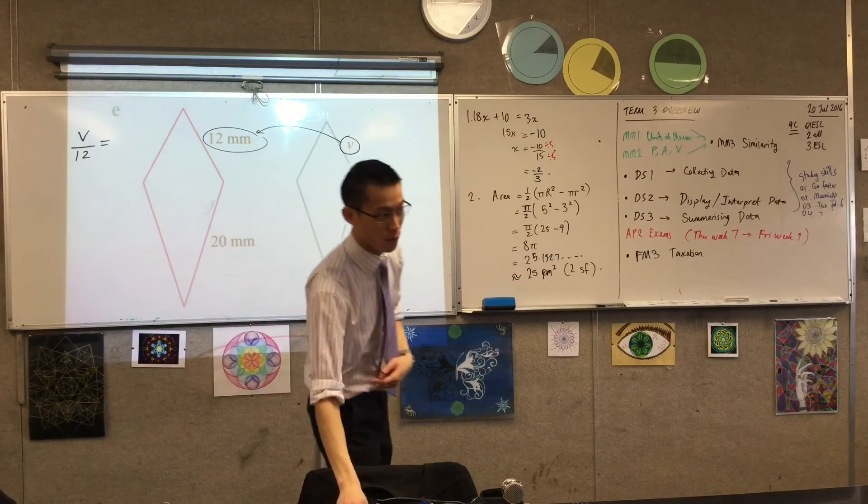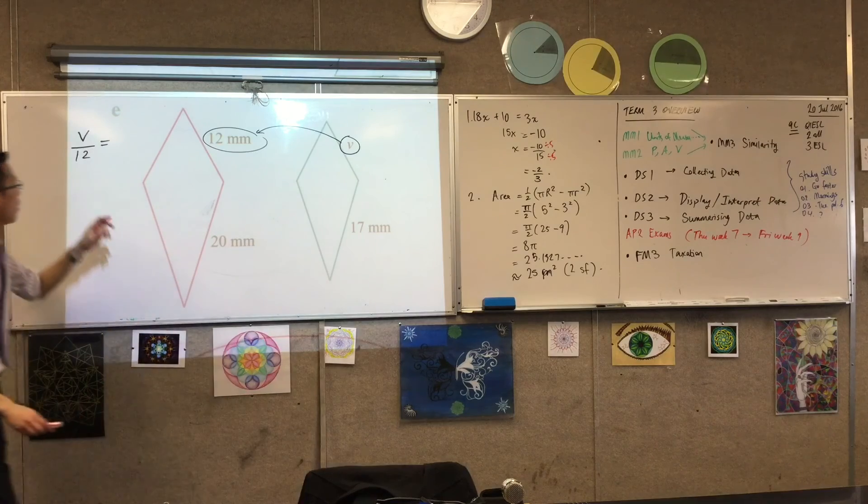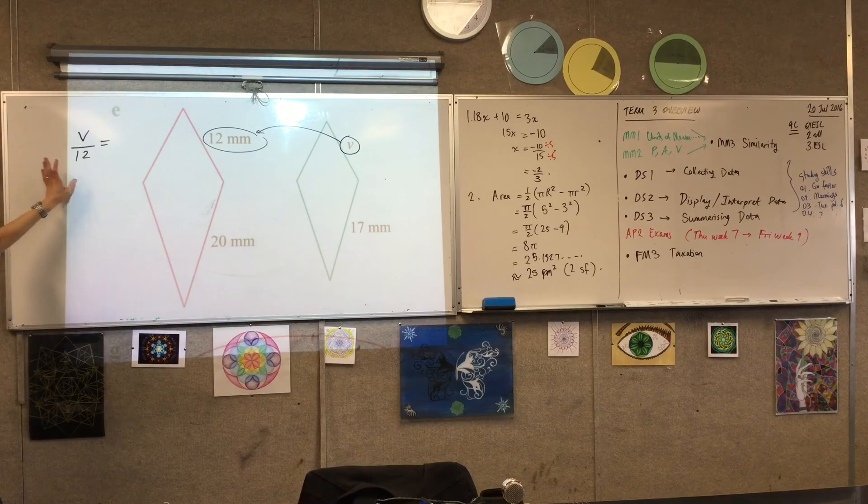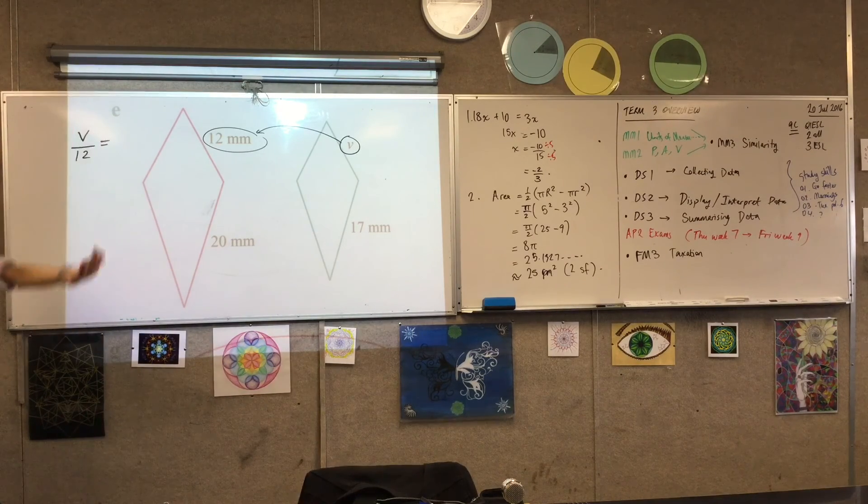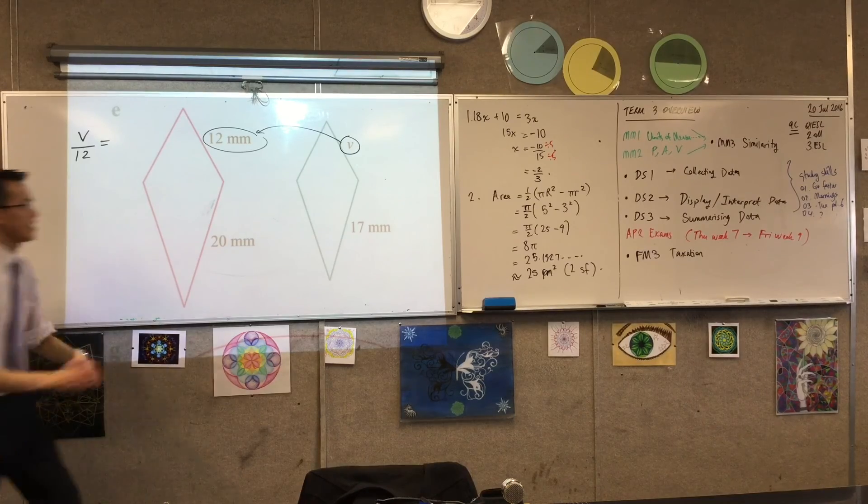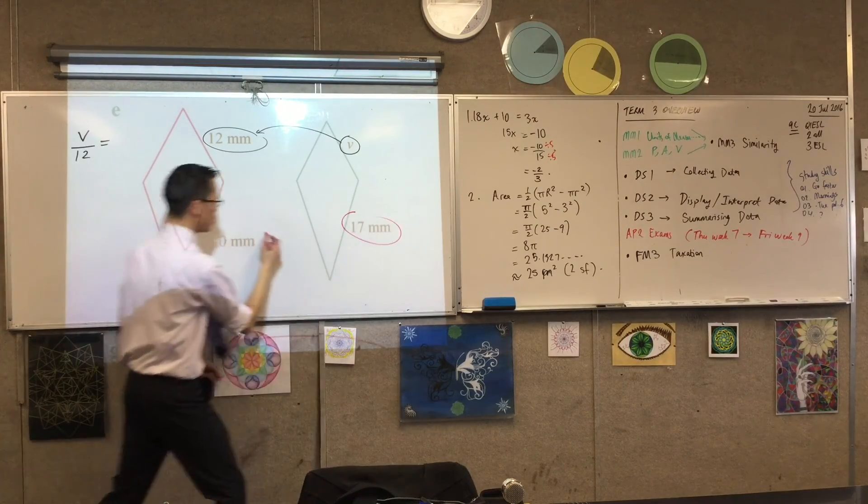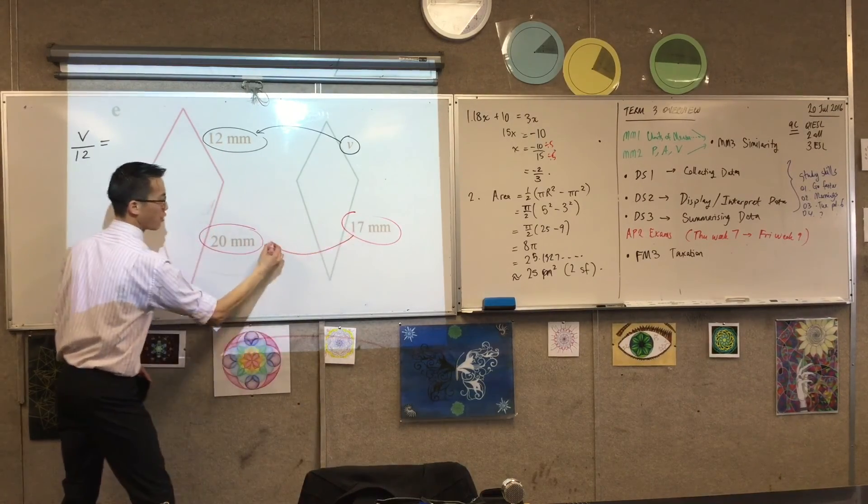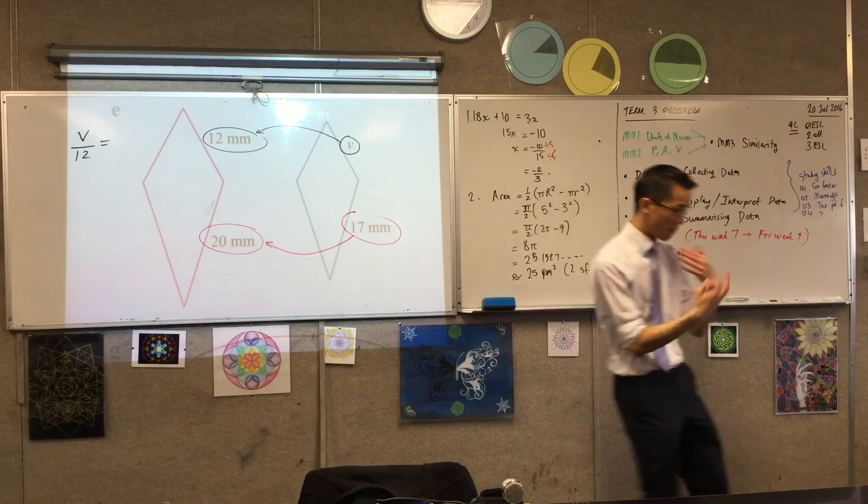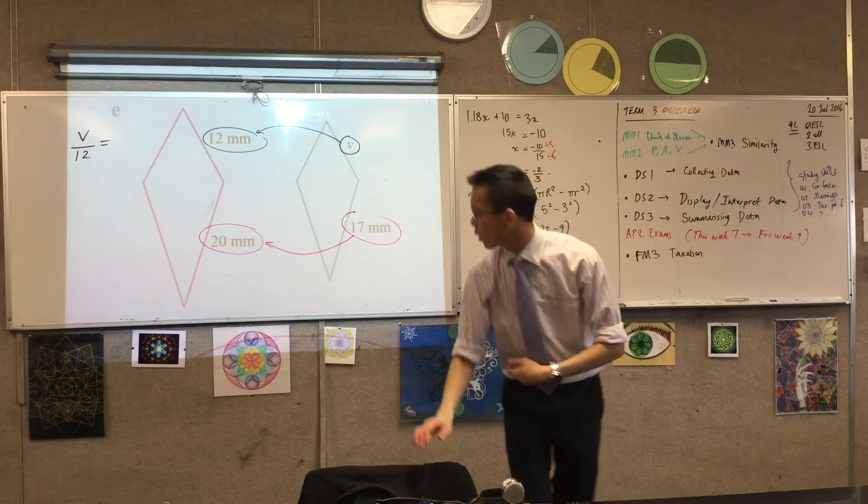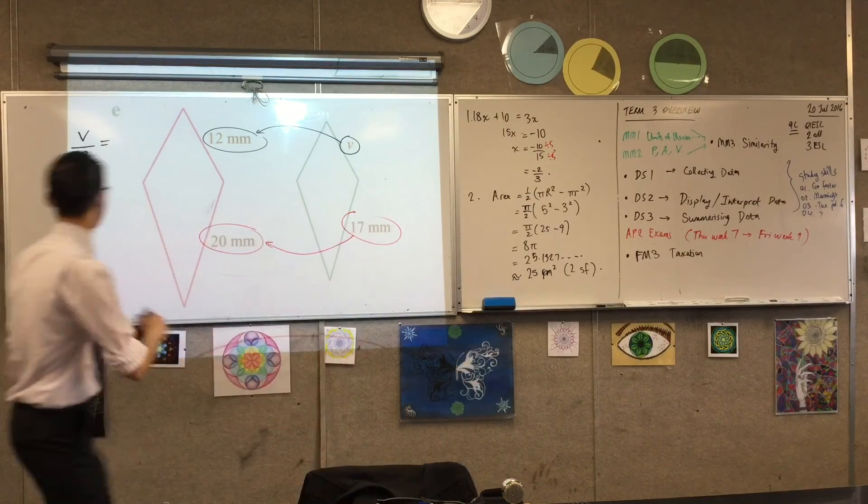So step one was write down the pronumeral. Step two was match it up with the corresponding length. Step three is to say, hey, look, there should be another ratio that's going in the same direction, so I can compare these two. So I'm going to write that down too.